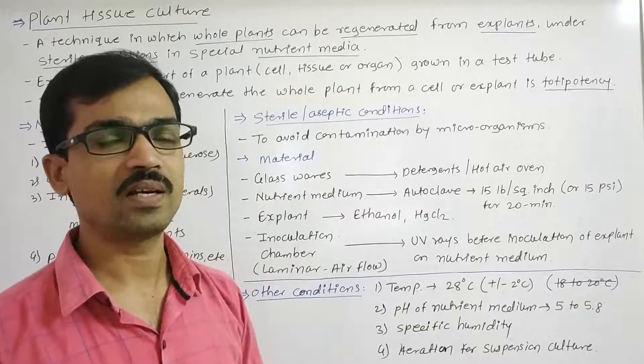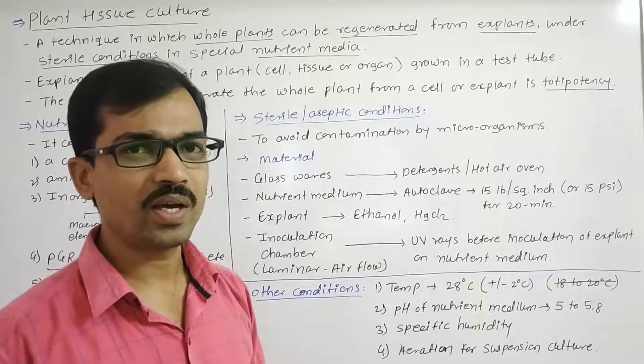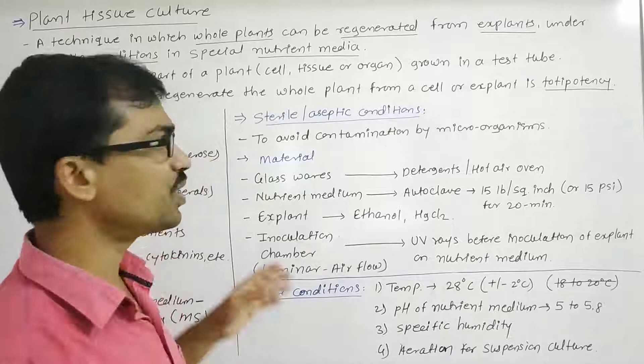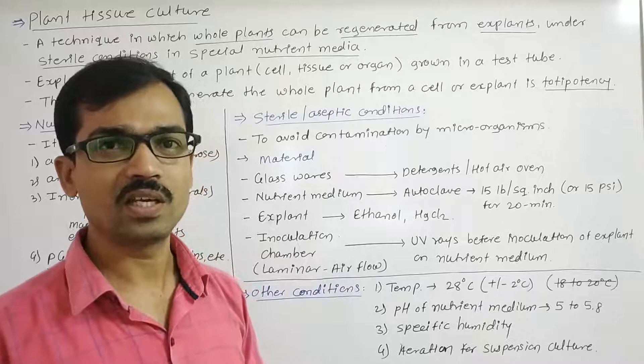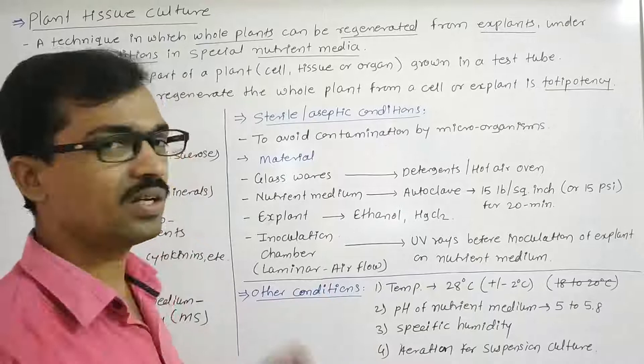In aseptic conditions, every unwanted microorganism cannot grow. Only the desired organism is grown. Such types of conditions are called sterile conditions. In plant tissue culture, sterile conditions — also called aseptic conditions — are maintained throughout the process.